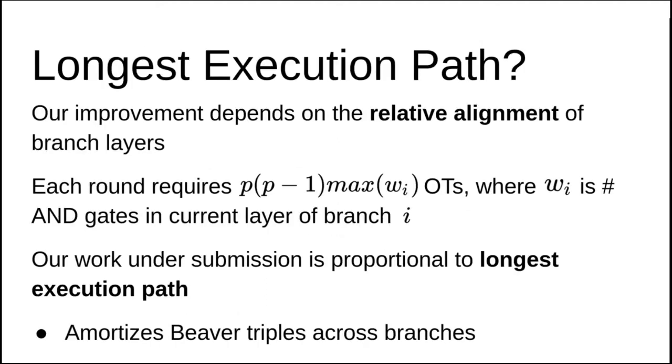On this slide, I discuss what branch alignment is and how it affects our improvement. In GMW, we simultaneously compute all available AND gates in rounds. The number of rounds is proportional to the multiplicative depth of the circuit. At any time, we can only evaluate gates whose input shares have already been computed. We cannot include future round AND gates into the current versus computation. In each round of GMW computation, we can only amortize OTs over the ready gates.